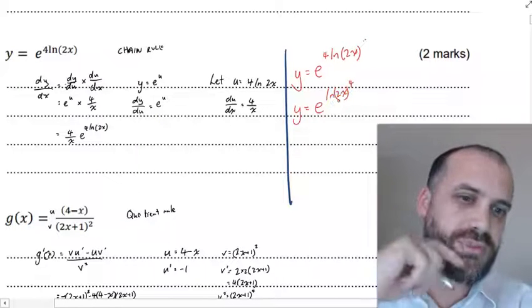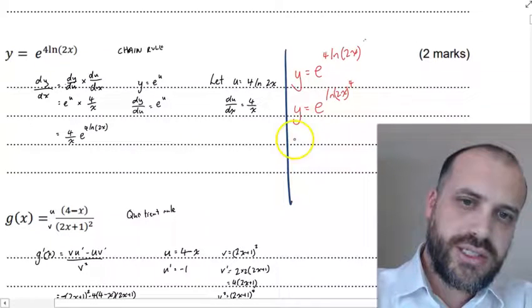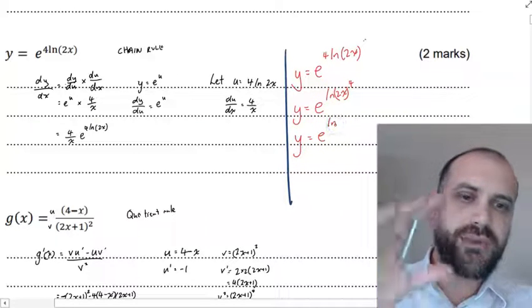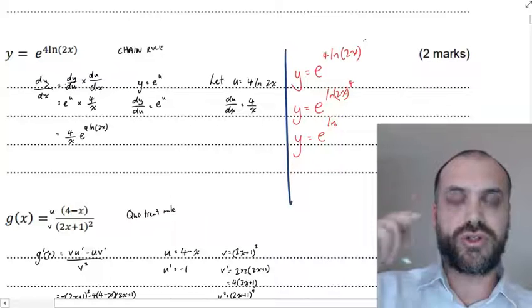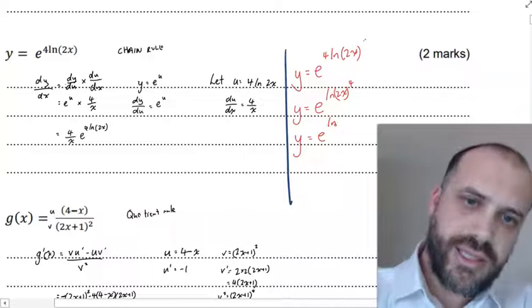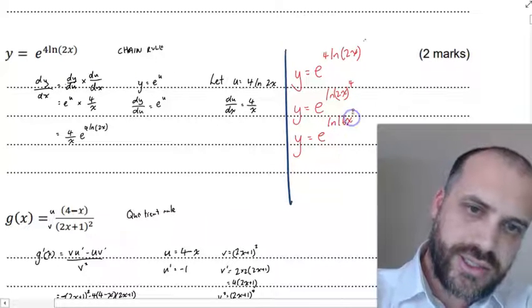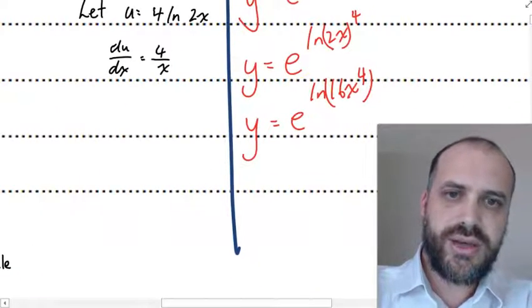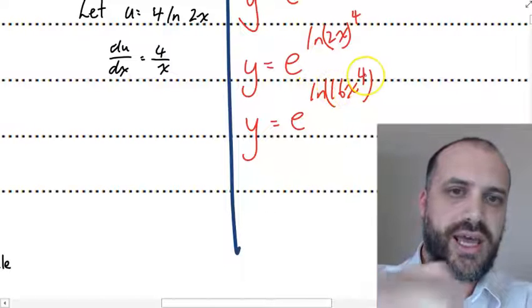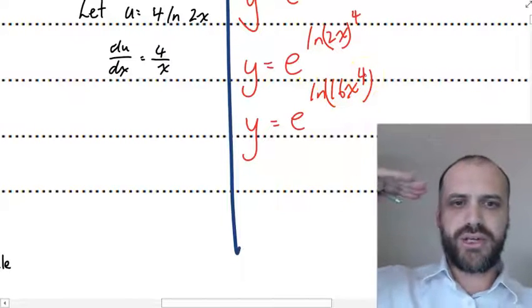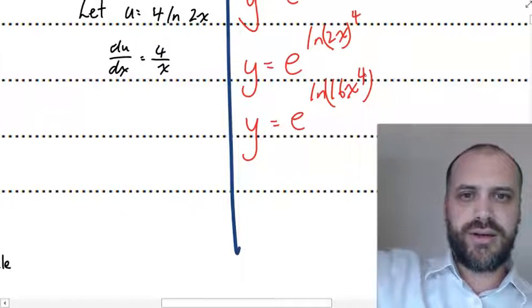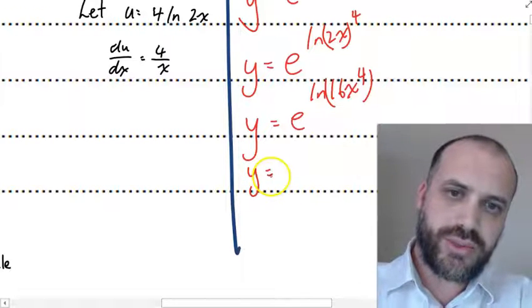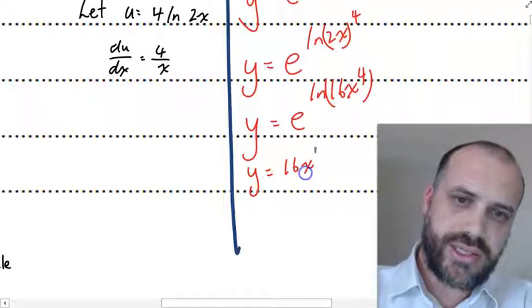It's that 2x that's being raised to the power of 4. So that gives me y equals e to the ln. And we've got 2 to the power of 4, which is 16, 16x to the 4. e to the ln 16x to the 4. And if you've got e to the ln, that simplifies to simply y equals 16x to the 4.